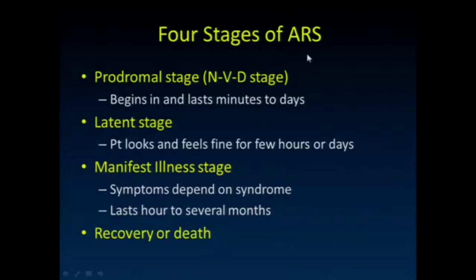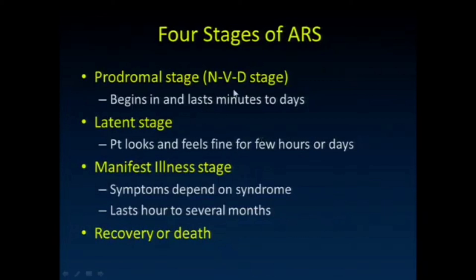Acute radiation sickness can have four stages. The prodromal stage involves nausea, vomiting, and diarrhea, lasting minutes to days depending on the level of exposure. Many have a latent period where the patient actually feels a little better after that first prodromal stage — that may last a few hours in cerebrovascular syndrome, or days in GI or hematopoietic syndrome. Then you get the manifest illness stage, with symptoms depending on which syndrome, lasting hours to several months. Recovery is almost only seen with the hematopoietic syndrome.